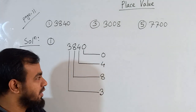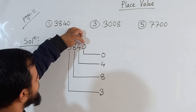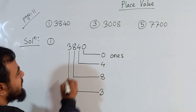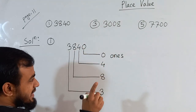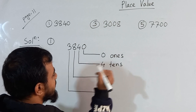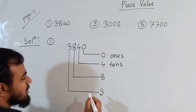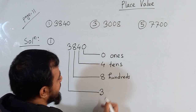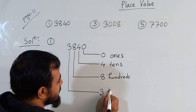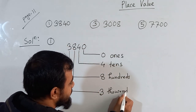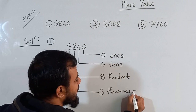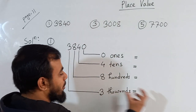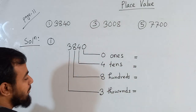Now write down the place value name. This 0 is in the 1's place. This 4 is in the 10's place. Write down 10's. This 8 is in the 100's place. So 8 is 100's. And this 3 is in the 1000's place.